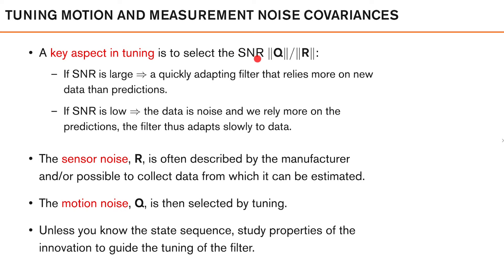As we saw in the toy example, if the SNR is high, that is that we have less measurement noise than process noise, we will have a quickly adapting filter that relies more on new data than the predictions.